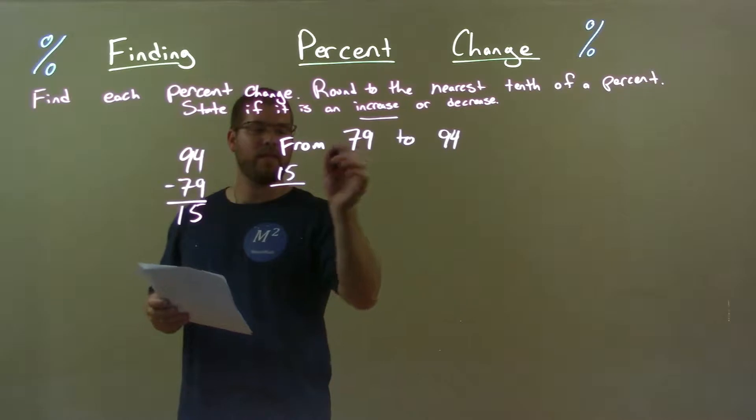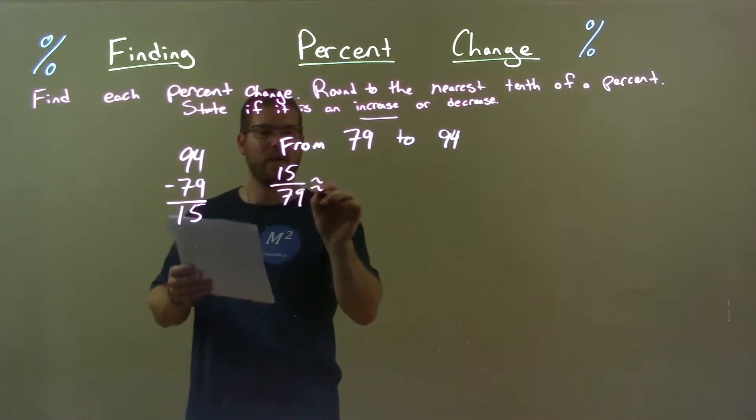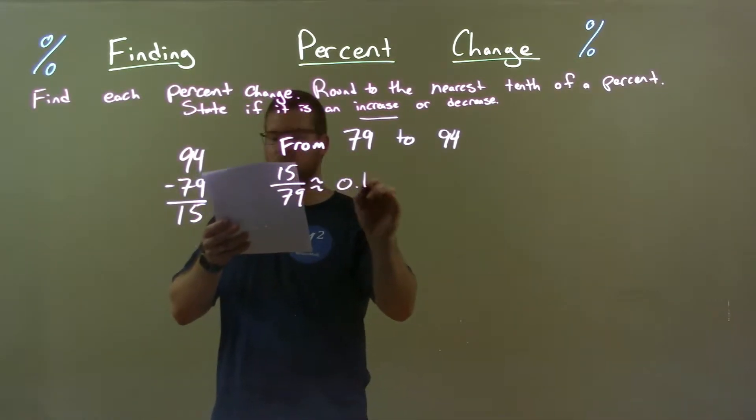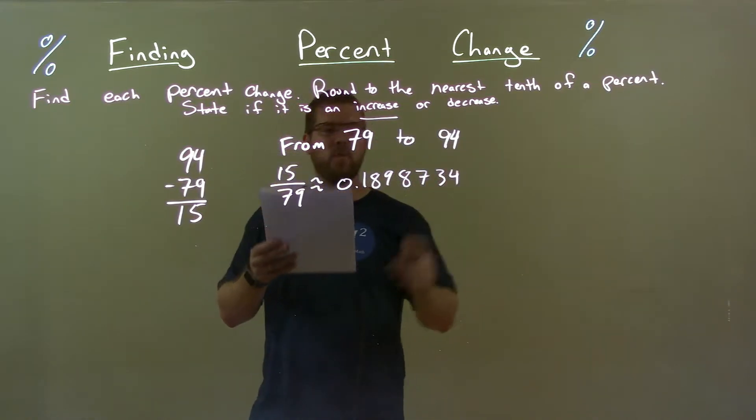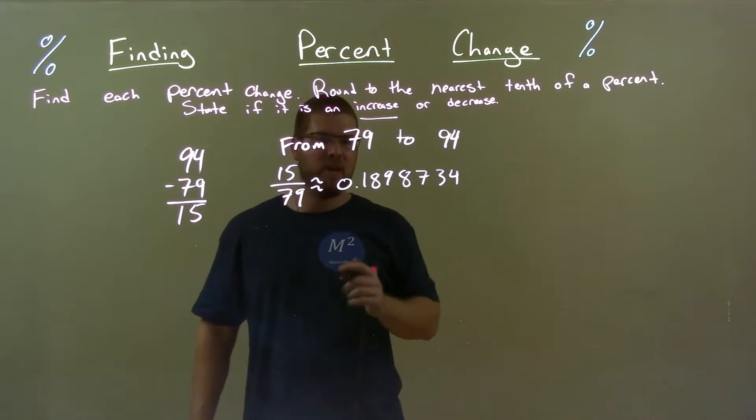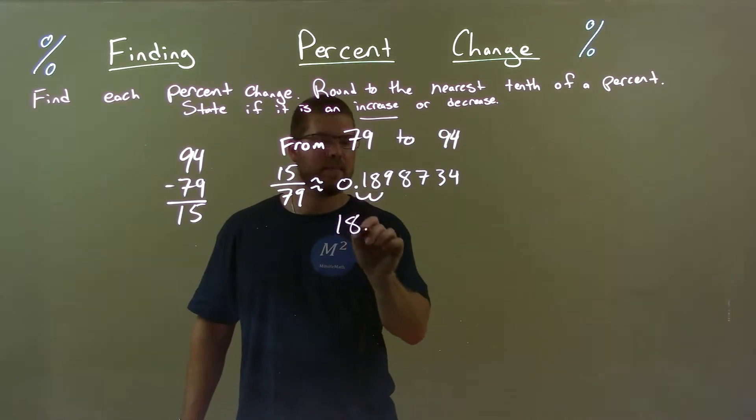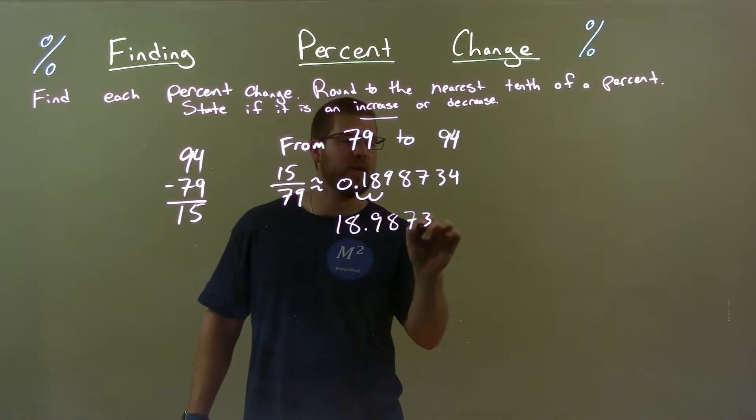Take that number 15, divide it by the first number 79 and we get the decimal here of 0.1898734. Alright, now write that as a percent. Decimal place two spots to the right gives me 18.98734%.